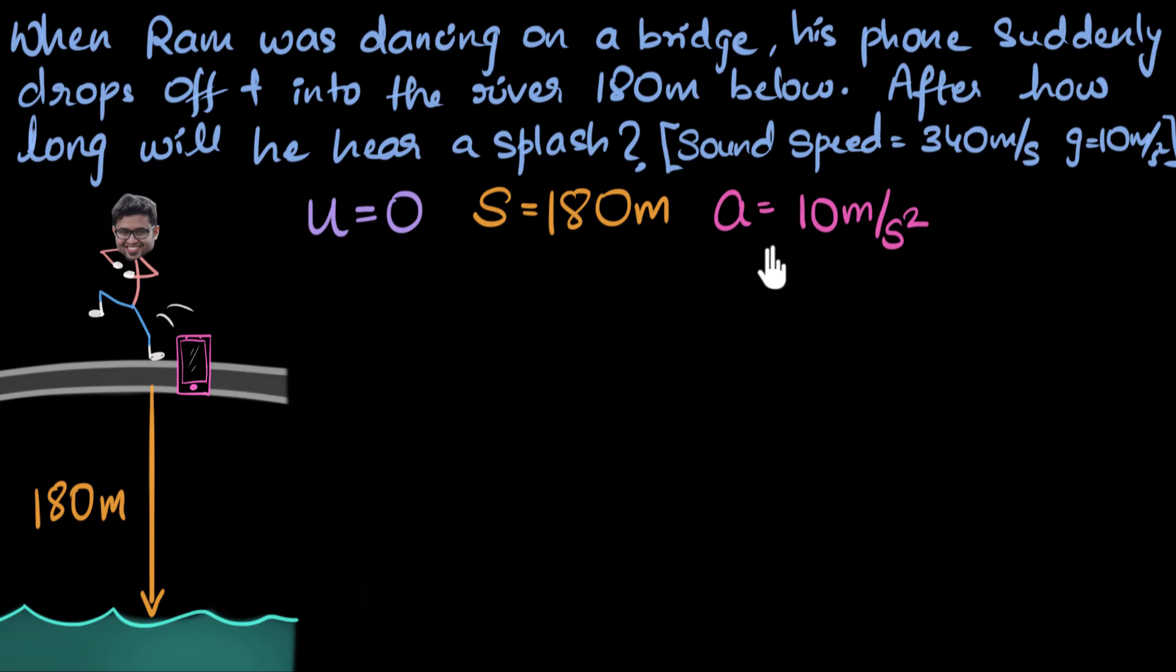Well, in general, whenever any object is increasing its speed, that's when we say its acceleration is positive. On the other hand, if an object is decreasing its speed, losing speed, that's when we say it has negative acceleration or deceleration. So let's see what's happening here. Our phone is falling down and we know that our phone is speeding up. And as a result, this acceleration is positive because it's gaining speed.